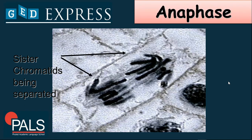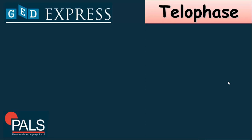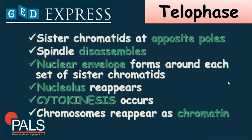Next, we have the last stage, which is telophase. During the telophase stage, the sister chromatids at opposite poles are intact already, and then the spindle disassembles. The nuclear envelope forms around each set of sister chromatids, and then the nucleus reappears. During this time, cytokinesis occurs — this is like the post stage after telophase. And then chromosomes reappear as chromatin, so from chromosomes, it will turn back into chromatin.